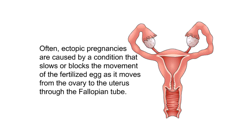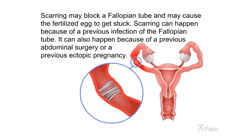Often, ectopic pregnancies are caused by a condition that slows or blocks the movement of the fertilized egg as it moves from the ovary to the uterus through the fallopian tube. Scarring may block a fallopian tube and cause the fertilized egg to get stuck. Scarring can happen because of a previous infection of the fallopian tube, a previous abdominal surgery, or a previous ectopic pregnancy.